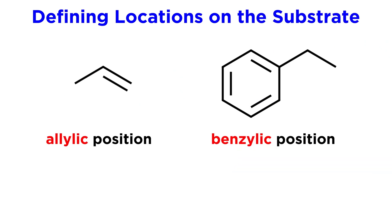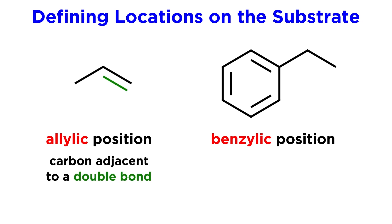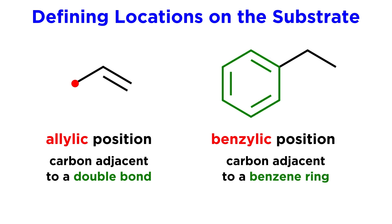First let's clarify what we mean by the allylic or benzylic position. When we say allylic position, we are referring to the carbon adjacent to a double bond. So given this alkene, this would be the allylic position. When we say benzylic position, we are referring to the carbon adjacent to a benzene ring. So given this molecule here, this would be the benzylic position.